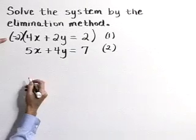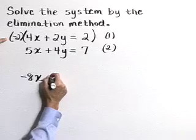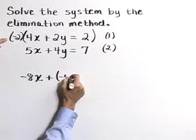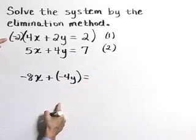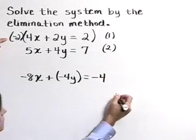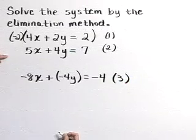Negative 2 times that 4x gives a negative 8x. Negative 2 times the 2y gives a negative 4y. And that's equal to a negative 4. I'm going to go ahead and call that equation 3 since we've changed things up a bit.